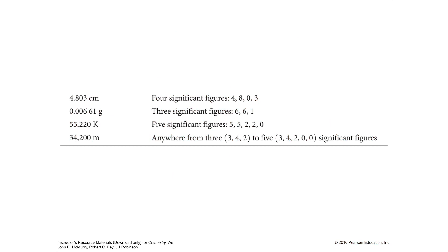Let's look at some examples. If I have 4.803: the 4 is significant, the 8 is significant, the 3 is significant, so therefore the zero in between them is significant — there are four significant digits. If I have 0.00661, the zeros at the beginning are all leading zeros and they are insignificant, so there are only three significant digits here.